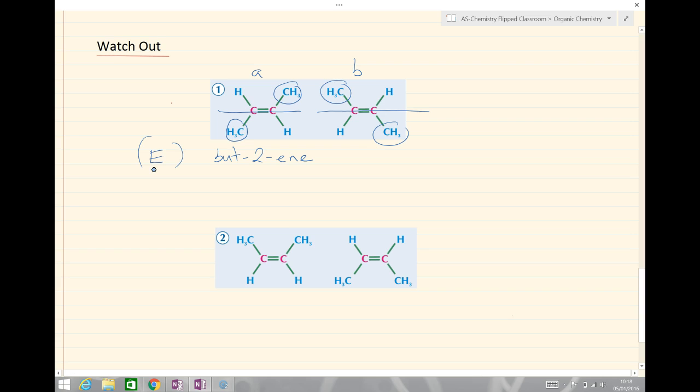With my example below, A and B, again, four carbons in the chain, so these are both but-2-ene. Second carbon is where the double bond occurs, so this is but-2-ene again.